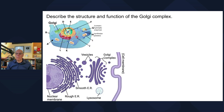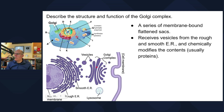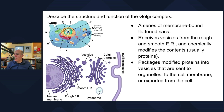The Golgi complex is a series of flattened membrane-bound sacs. It receives vesicles from the rough and smooth ER and chemically modifies the contents — usually proteins. It packages modified proteins into vesicles that are sent to organelles, to the cell membrane, or exported from the cell. It's also known as the Golgi body or Golgi apparatus.